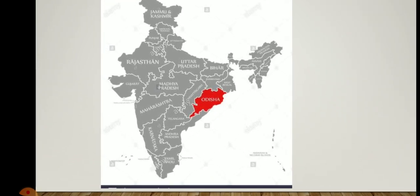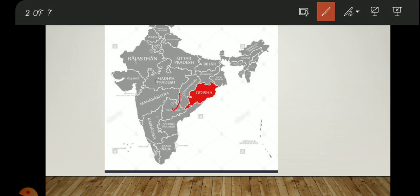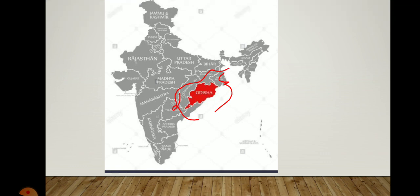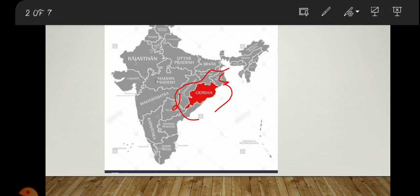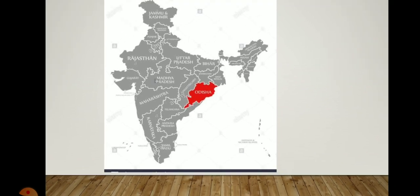We are talking about Odisha, so Odisha is located right here on the map. Have a look at where other states are also located. Jammu Kashmir is located on the top, Rajasthan here, Uttar Pradesh here. Hope you have finished looking — let's move towards the questions about Odisha.